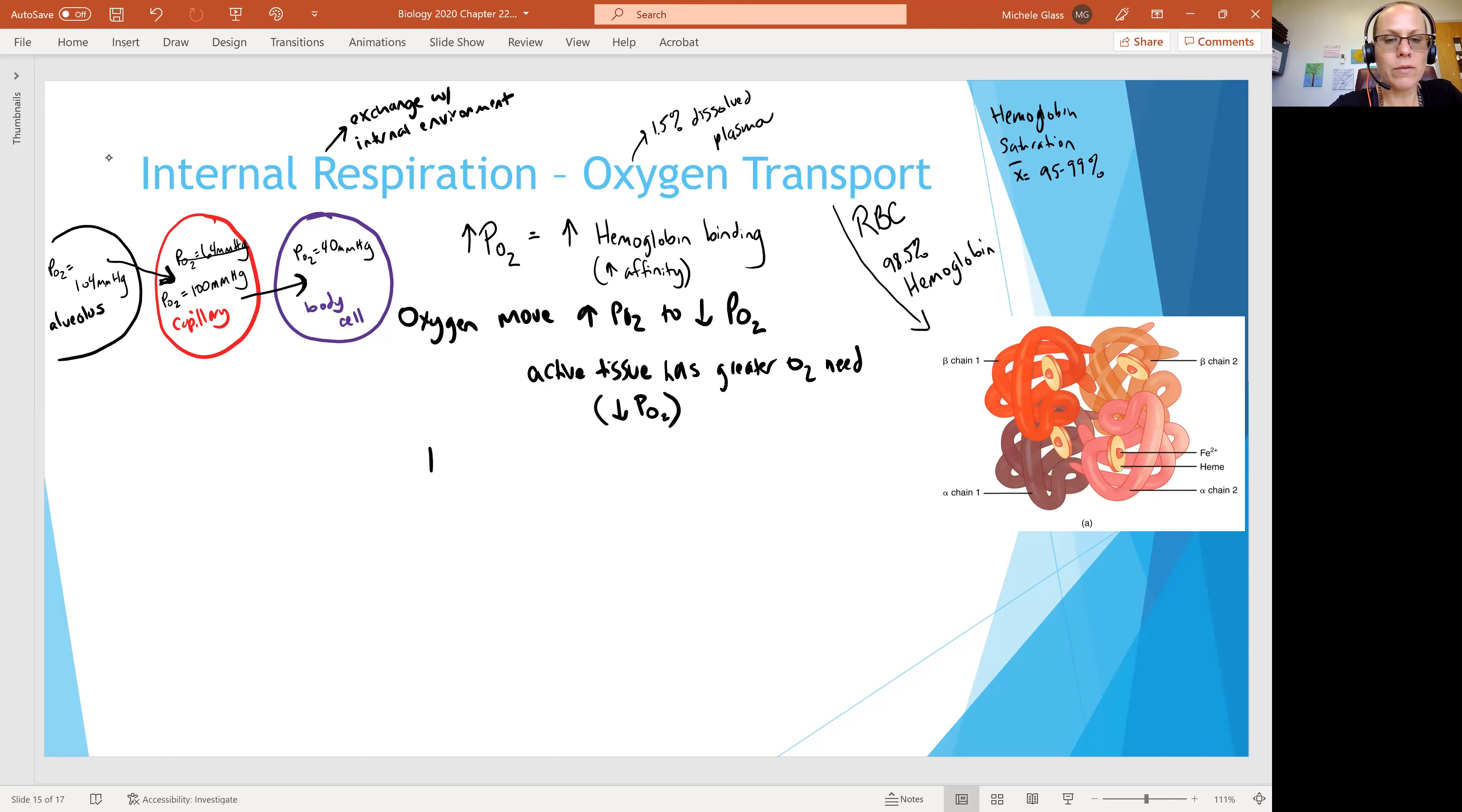We'll also see that if you increase the temperature, you're going to increase the release of the oxygen. This should make sense also in terms of active tissues. So when you're doing metabolism, you're generating heat. So active tissues are going to have a slightly elevated temperature. And so they're going to need more oxygen. So this is really lovely. It makes it easier for the oxygen to hop off the boat and onto the tissue as needed.